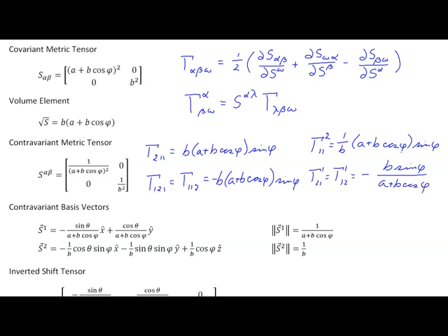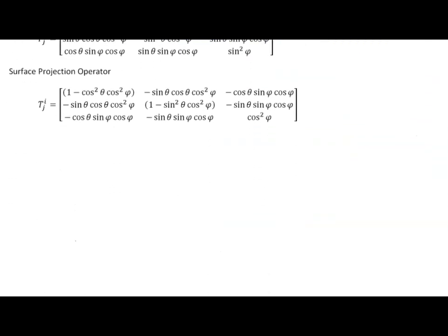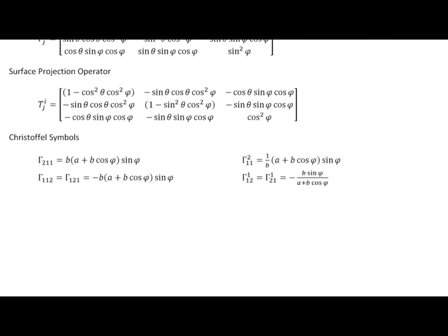Let's move down and put that in place. These are the Christoffel symbols of the first kind, and these are the Christoffel symbols of the second kind. So we've evaluated all of the Christoffel symbols for our sample surfaces using the first method.